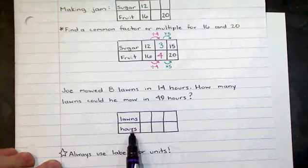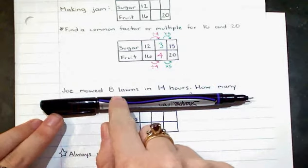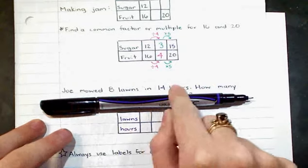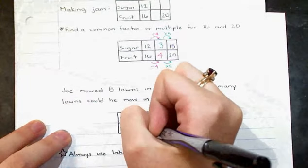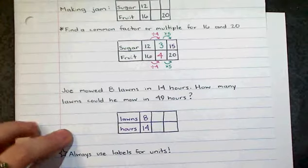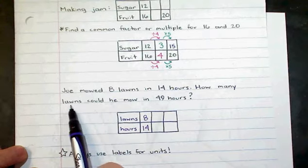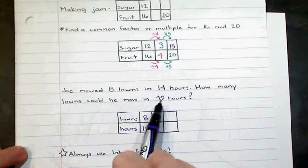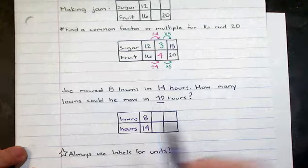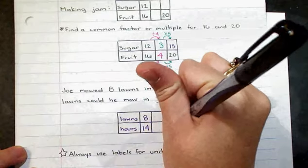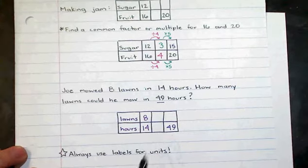So once I have lawns in hours, I can go ahead and fill in just the original information that I know. The original information is, he mowed 8 lawns in 14 hours. So there's one ratio. My ratio is 8 lawns to 14 hours. And once I have 8 lawns in 14 hours, I'm solving for how many lawns could he mow in 49 hours. So 49 needs to go with my hours. And I'm going to go ahead and put it at the end of the box here, because it might take me more than one step to get from 14 to 49.